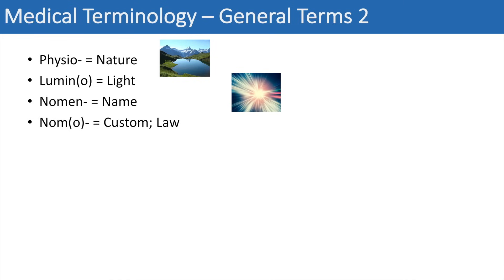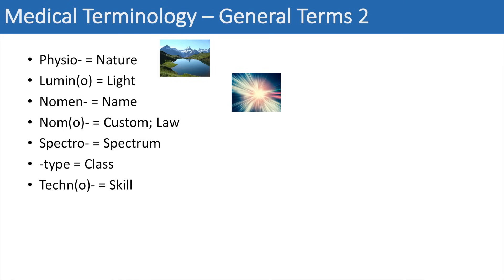The next one is gnomo or nommo, which means custom or law. The next one is spectro, which simply means spectrum — you can just think of that exact word. The next one is the suffix -type, which simply means class, so you can think of somatotype, a class of body shape. The next one is the prefix techno, which simply means skill — you can think of technique.